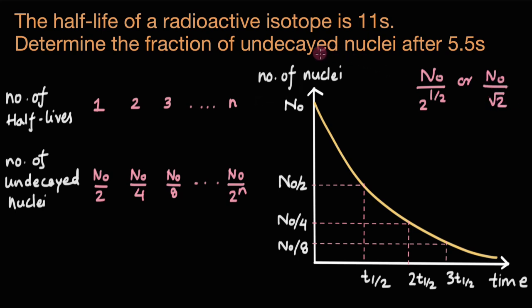We can say that the number of undecayed nuclei after 5.5 seconds, let's call that N, this is equal to N0 divided by root 2. And the fraction of undecayed nuclei, that would be the number that remains divided by the initial number of nuclei. So that would be N divided by N0, and this comes out to be equal to 1 by root 2.